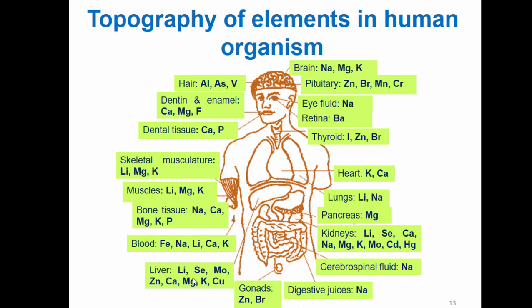In the liver we have lithium, molybden, zinc, calcium, potassium, and sodium. In cerebrospinal fluid we have sodium. In the kidney we have lithium, calcium, sodium, magnesium, potassium, molybden, cadmium, and mercury. Pancreas we have magnesium. Lungs there is lithium and sodium. Heart we have potassium and calcium. In the thyroid you find iodine, zinc, and bromium. In the retina we have barium, and in intraocular fluid we have sodium.